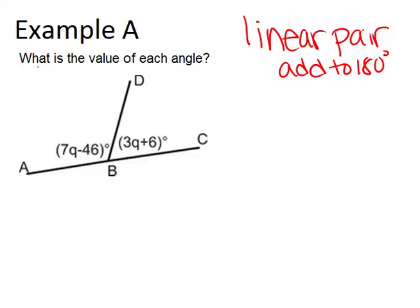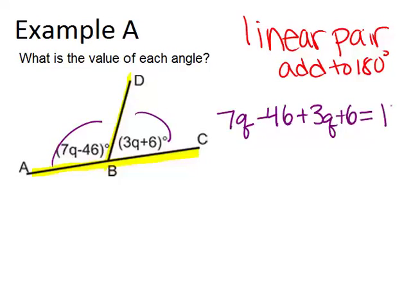In this picture it says, what is the value of each angle, and I notice we have a straight line here that has been divided into two different angles. So these two angles, because they are on a straight line and share this common ray, form a linear pair. So that means that these two angles have to add up to 180 degrees. So I first want to solve for Q using what I know about this situation, which is that the two angles, 7Q minus 46 and 3Q plus 6, have to add up to 180 degrees. So I take those two expressions for the angles and add them, and have them equal 180 degrees.